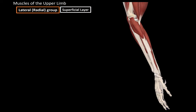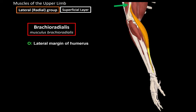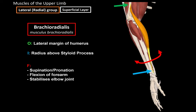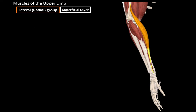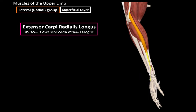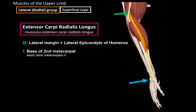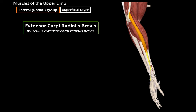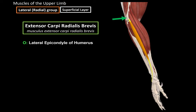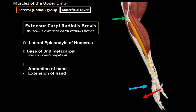In the superficial layer, the brachioradialis originates from the margin of the humerus and inserts at the radius above the styloid process. Its function alternates between supination and pronation — supinating on an extended forearm and pronating on a flexed forearm — and it also flexes the forearm and stabilizes the elbow joint. The extensor carpi radialis longus originates from the lateral margin and lateral epicondyle of the humerus, and inserts at the base of the second metacarpal bone on the backside; it abducts and extends the hand backwards. The extensor carpi radialis brevis originates from the lateral epicondyle and inserts at the base of the third metacarpal bone on the backside, with the same functions of abduction and extension of the hand.